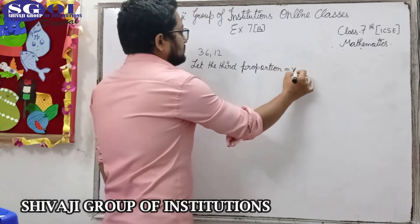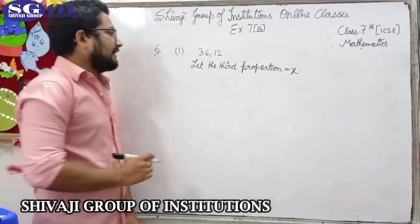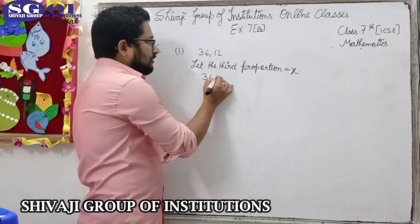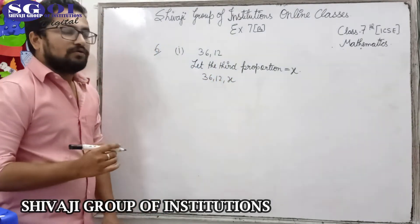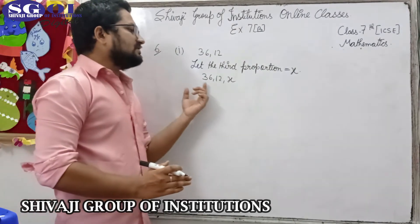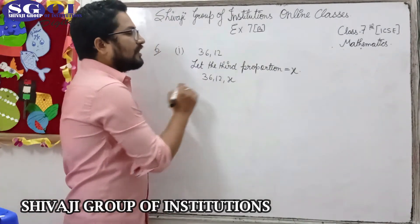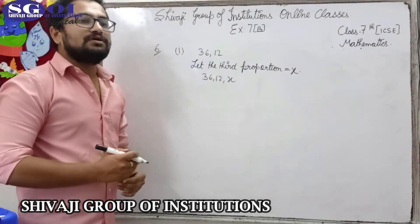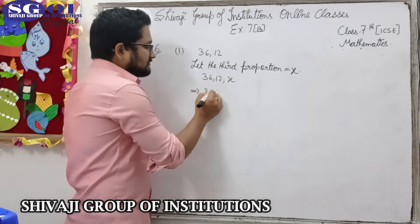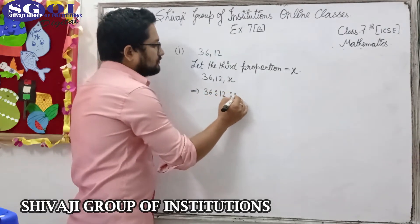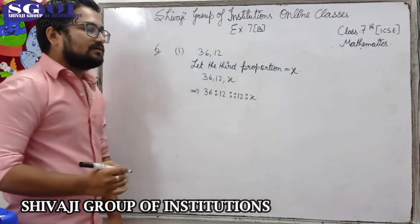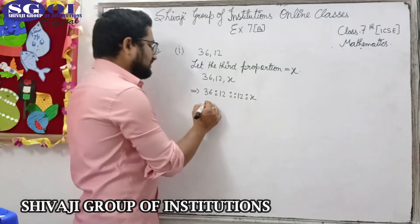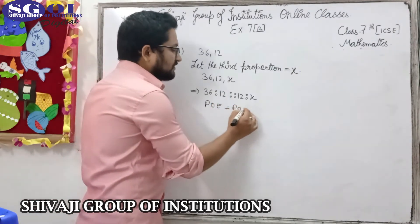Let the third proportion be equal to x. We have to keep one thing in mind — you will have to repeat the middle term two times in order to write these numbers into continued proportion. So it will give us 36 ratio 12, proportional to 12 ratio x. We know that if numbers are in proportion, they follow the rule: product of extremes is equal to product of means.